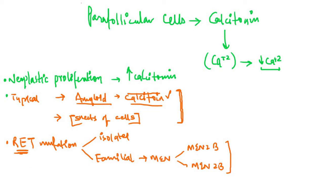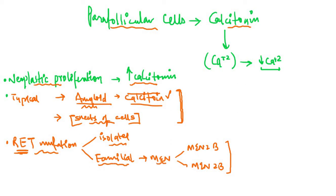To make a quick recap of medullary carcinoma of the thyroid: parafollicular cells secrete calcitonin, and in medullary carcinoma there is neoplastic proliferation of those parafollicular cells, which secrete increased calcitonin. This increased calcitonin forms amyloid stroma containing sheets of neoplastic cells. The carcinoma is associated with RET mutation, which may be isolated or familial as MEN 2A and MEN 2B syndromes.